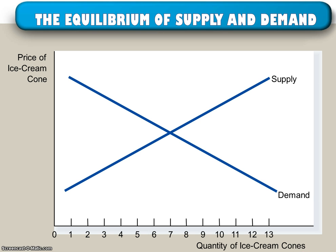And on the graph, this is what it would look like. Where the demand curve crosses the supply curve, the equilibrium price and quantity can be determined.